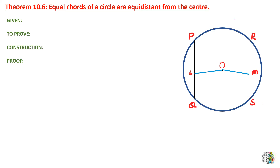What does this theorem tell us? If a circle has two equal chords, what will be equal distance from the center? What is given here? PQ is equal to RS. So we write down: PQ is equal to RS.